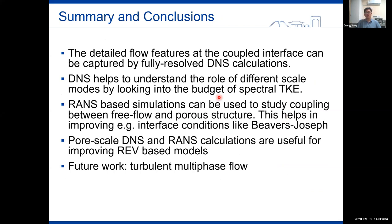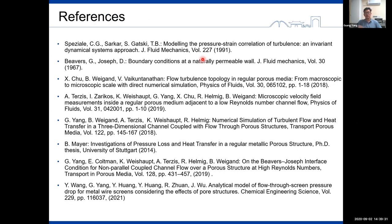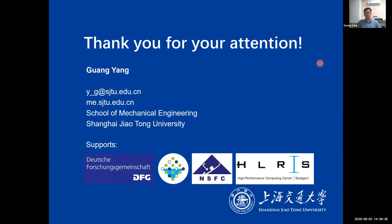At last, to sum up my presentation, the detailed flow features at the coupled interface can be captured by the fully resolved DNS calculations. DNS can also help to understand the role of different scale models by looking into the budget of the spectral TKE. RANS-based models can be used to study these coupling processes, which also can improve the interface conditions. RANS-based models and pore scale simulations by both DNS and RANS can be used for improving REV-based models. While this work is limited to only single-phase turbulence, the study of turbulent multi-phase flows is also in our future plan. And these are the references for this work. Thank you very much for your attention.